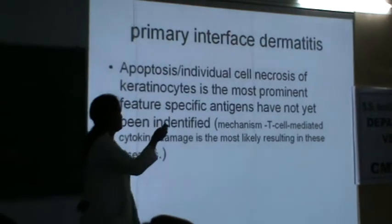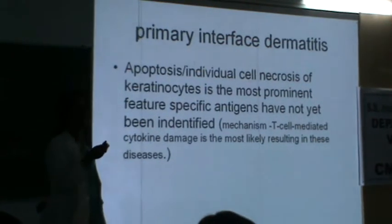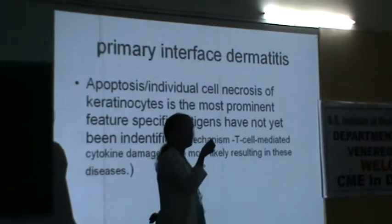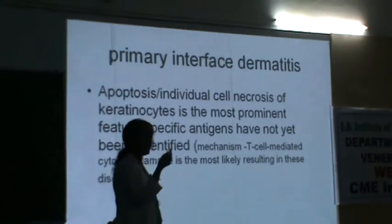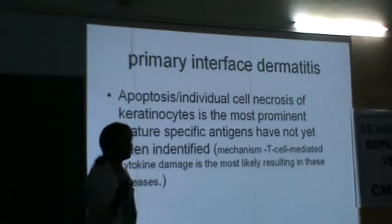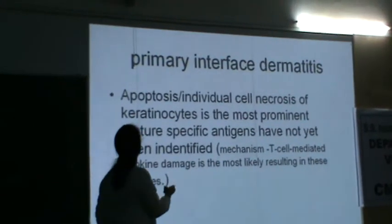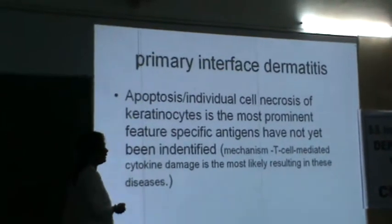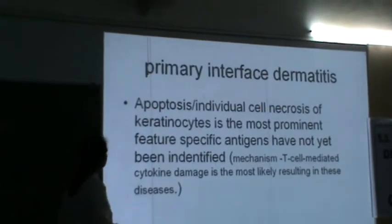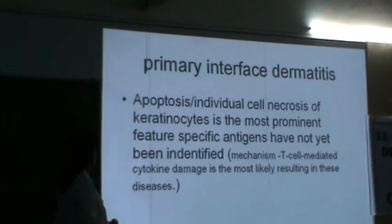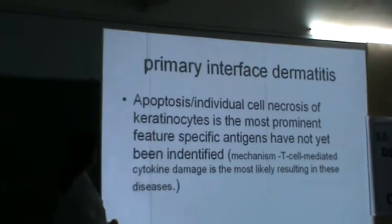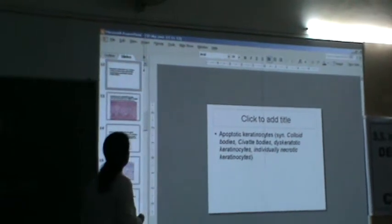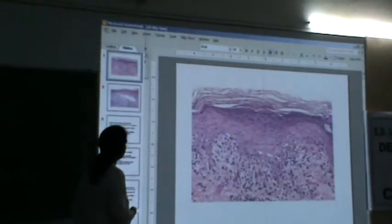Let's talk about primary interface dermatitis. Another feature we see very importantly is apoptotic bodies. What do we call them? Individual cell necrosis, necrotic keratinocytes — also called civatte bodies, colloid bodies. So apoptosis and individual cell necrosis are another feature that we see in primary interface dermatitis.